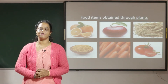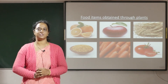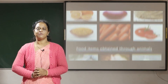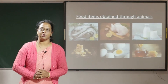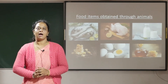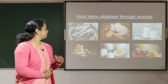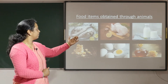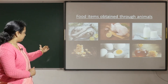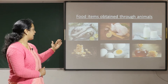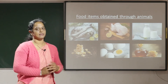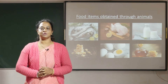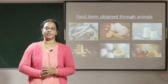Now let's see the food items which we obtain through animals. The food items obtained through animals are fish, chicken, milk, cheese, egg and honey, which are main sources of protein.